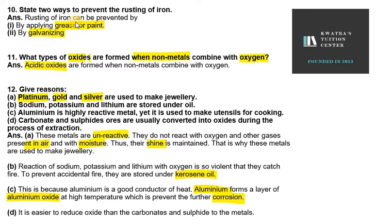Part four: carbonate and sulphide ores are usually converted into oxides during the process of extraction. This is because it is much easier to reduce an oxide to a metal than to reduce carbonates and sulphides directly. Converting to the oxide form first and then reducing it is simpler compared to working with carbonate and sulphide ores directly.